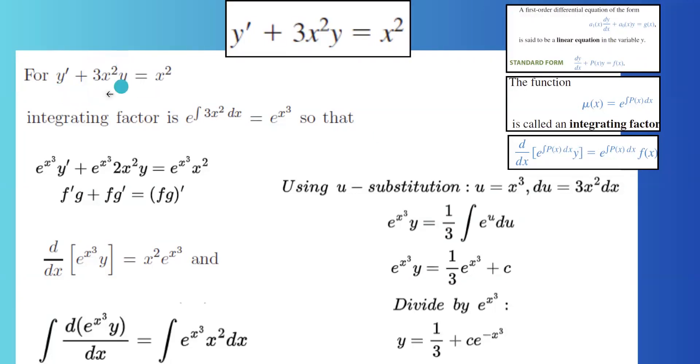Basically you have y prime plus 3x squared y equals to x squared. It's already written in standard form. P of x is 3x squared.